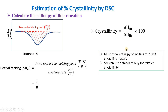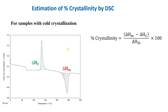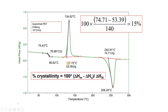If we observe a cold crystallization peak in the graph, we need to subtract the enthalpy of crystallization, because it will affect the delta H of melting. We subtract this value so that we get the correct percentage crystallinity when a cold crystallization peak is present.